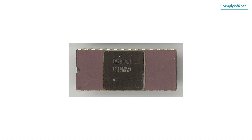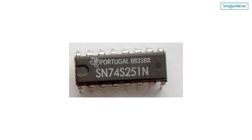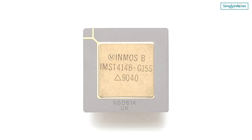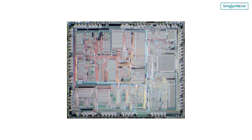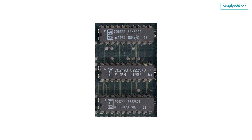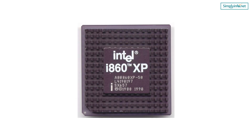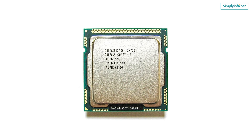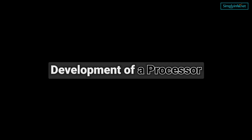Bit Slice Processors. Examples include AMD 2900, AMD 2909, AMD 2910, and AMD 29300 series, Texas Instruments SN74A and S88XXX series, etc. Transputers. Examples include INMOS T414, INMOS T800, etc. Graphics Processors. Examples include Intel A2786 graphics processor, IBM's 8514-A, Texas Instruments TMS34010 and TMS34020, Intel i860 and Intel i750, etc. Other types include ASIC (Application Specific Integrated Circuit), SIMD (Single Instruction Multiple Data), Symbolic Processors, and Development of a Processor.